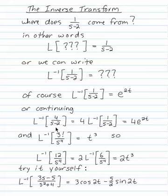But you could manipulate that if you had maybe some other constant, say 4 over s minus 2. But that's just 4 times 1 over s minus 2, and 1 over s minus 2 comes from e to the 2t. So where does 4 over s minus 2 come from? It must come from 4 times e to the 2t.